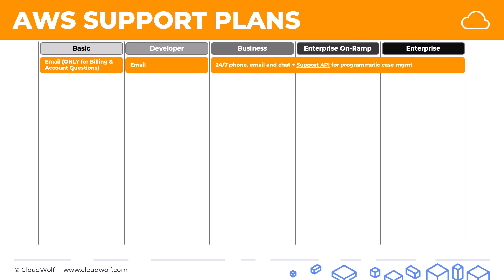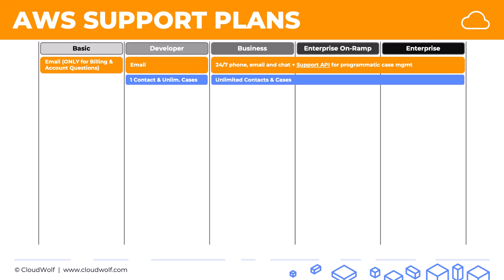In terms of contacts and cases: in basic, you don't have any. In the developer plan you have one contact and unlimited cases — meaning only one person on your team can contact AWS support, but you can raise an unlimited number of cases. The developer plan is essentially for an individual developer building things in AWS. In the other three plans you have unlimited contacts, so as many people as you like can contact support and have unlimited cases open.